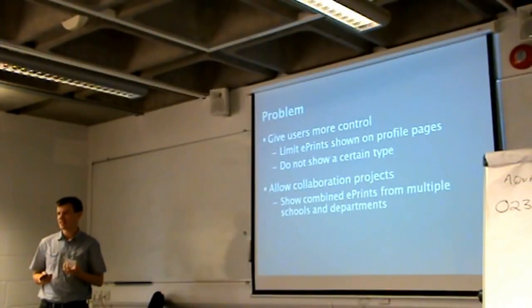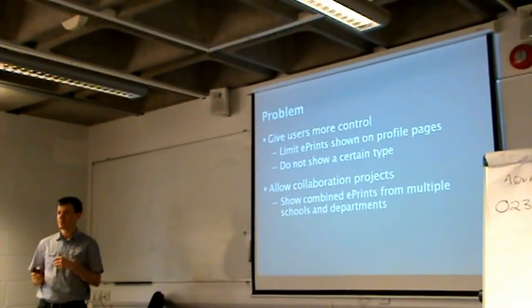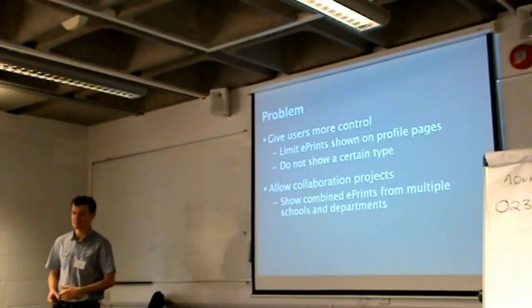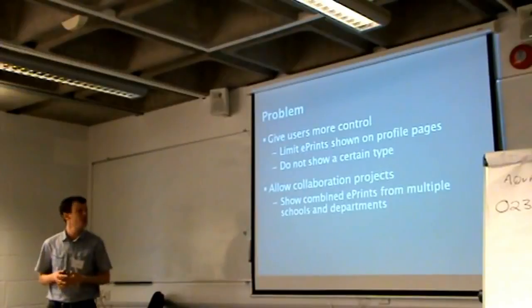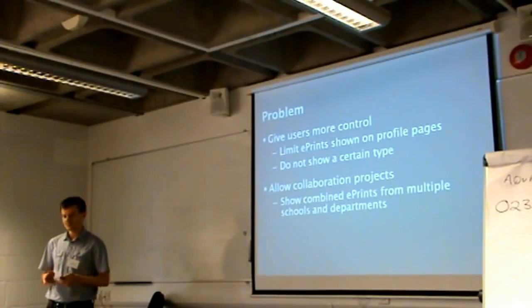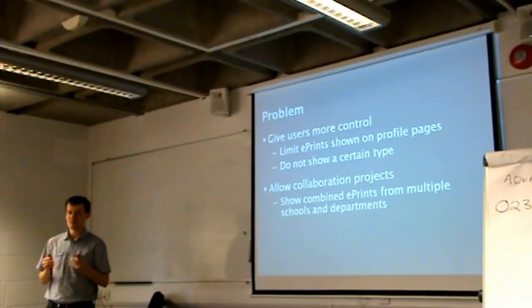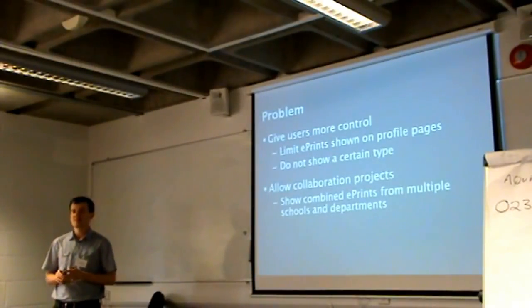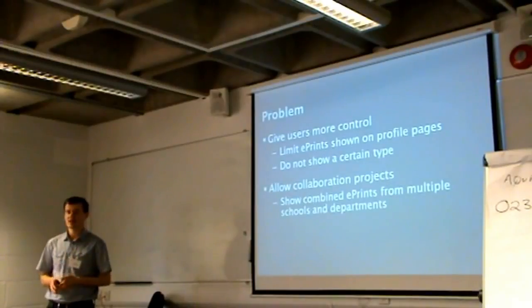Also occasionally, for example, a monograph type may not be important for a particular department — physics may be less interested, perhaps compared to social sciences or vice versa. And there's also the case of collaboration projects, where professors from different departments all work together on a project, and that project will produce three or four ePrints, and there needs to be a way of linking all those ePrints together.